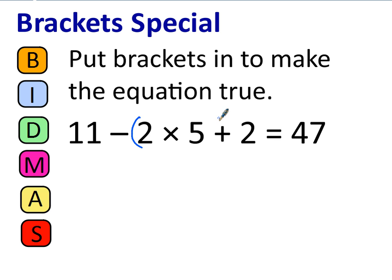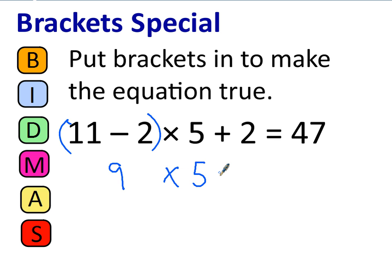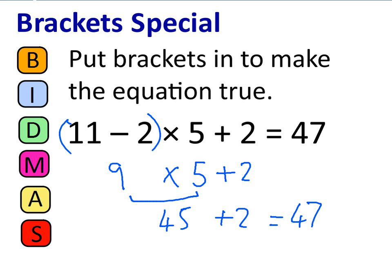Could we put the brackets around the multiplication? Well, that's not going to make any difference because we would have done the multiplication first anyway. What about brackets around 11 take away 2? That gives 9 times 5 add 2 — then we do the multiplication first: that's 45, add 2 equals 47. So the brackets we were missing were right here around the 11 take away 2. Sometimes you'll get questions where you have to put brackets in where they belong.